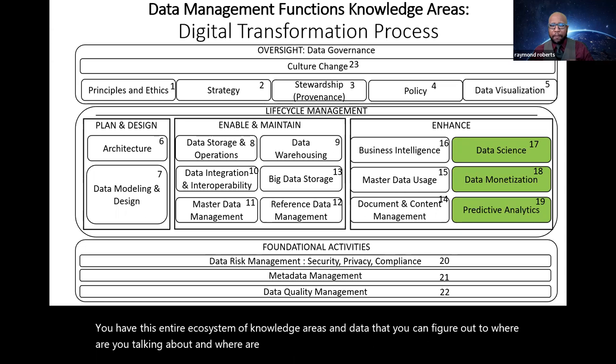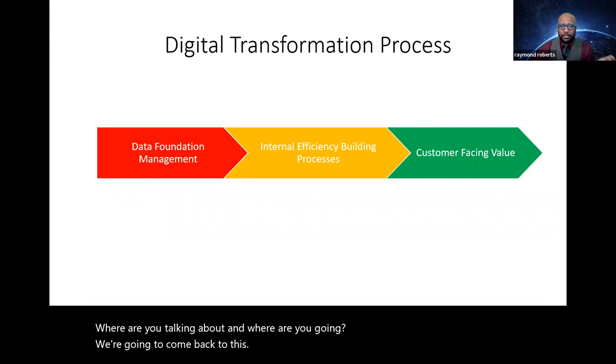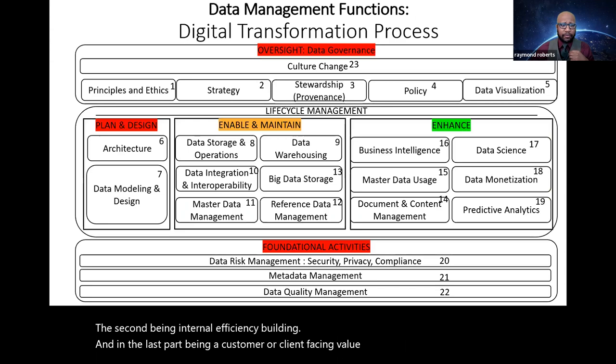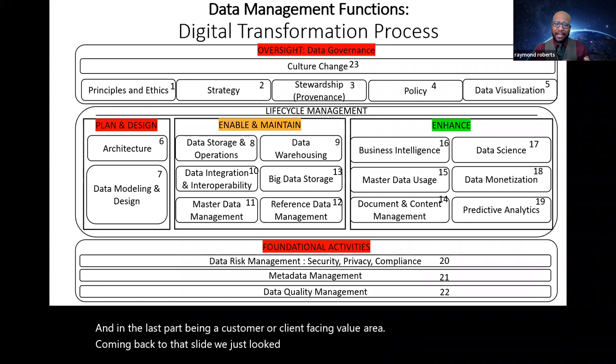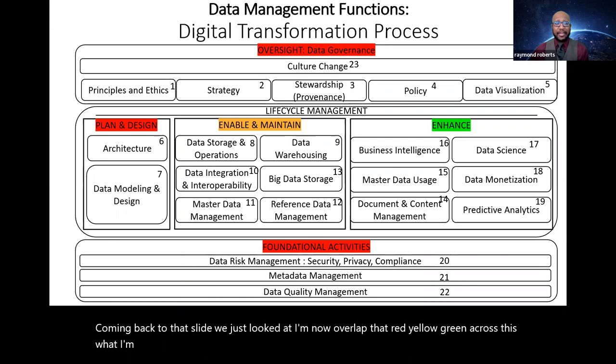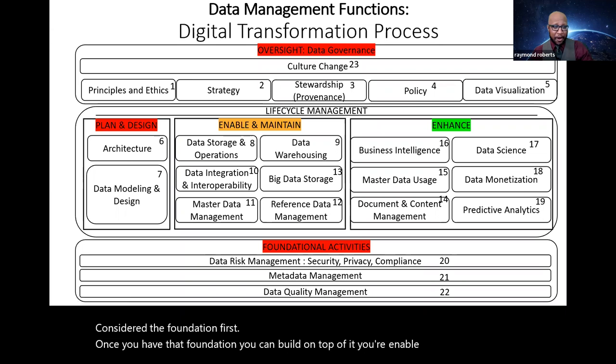I, to this day, I'm amazed how few people know, are aware of this. What you see here very quickly is you have this entire ecosystem of knowledge areas in data that you can figure out: where are you talking about and where are you going? We're going to come back to this digital transformation process. There's actually, you can think of it as three areas. The first being data foundation management, the second being internal efficiency building, and then the last part being customer or client based value.